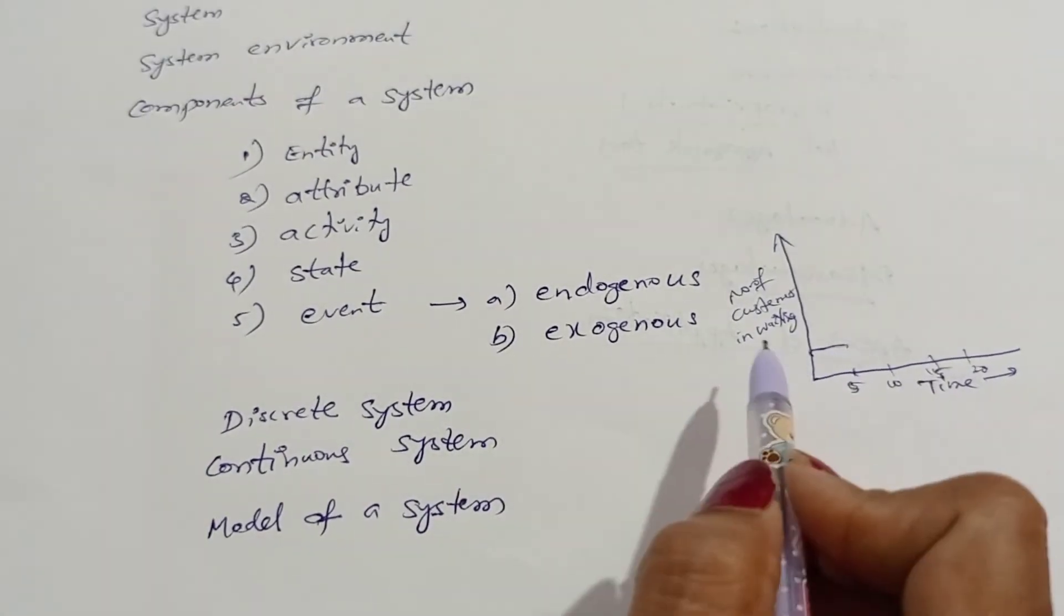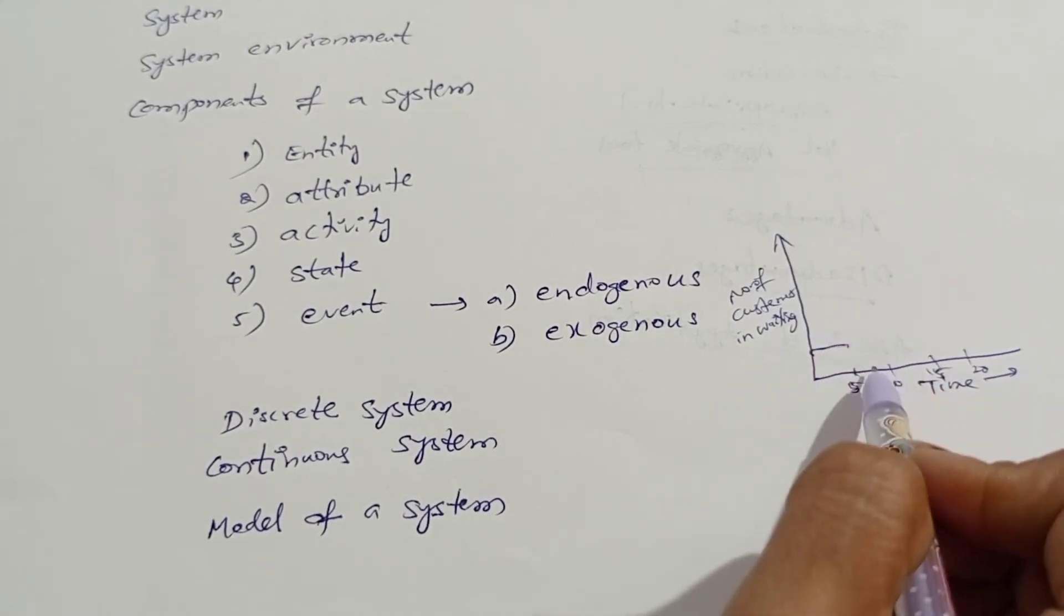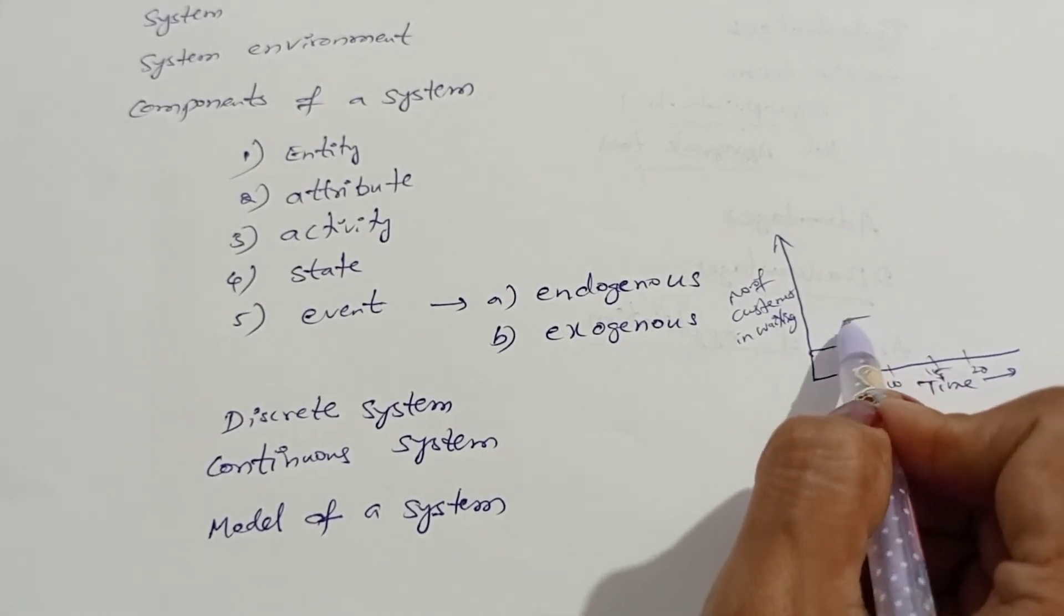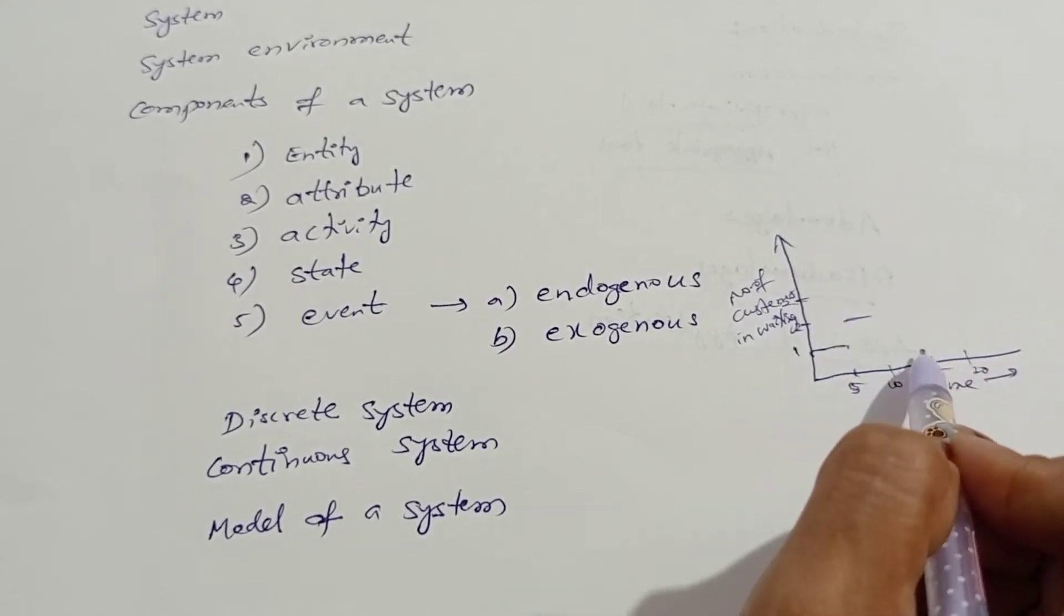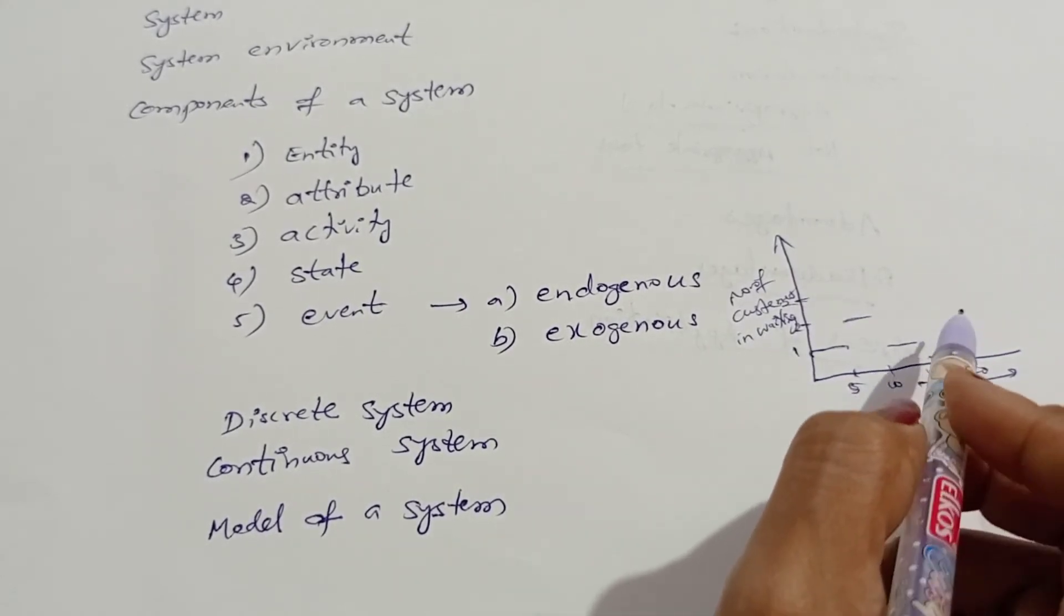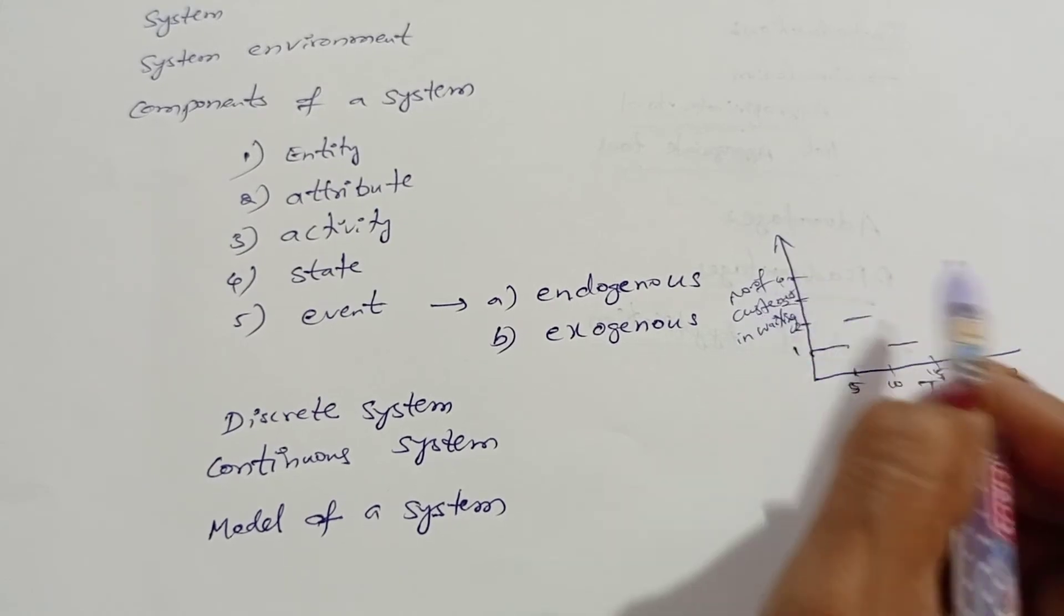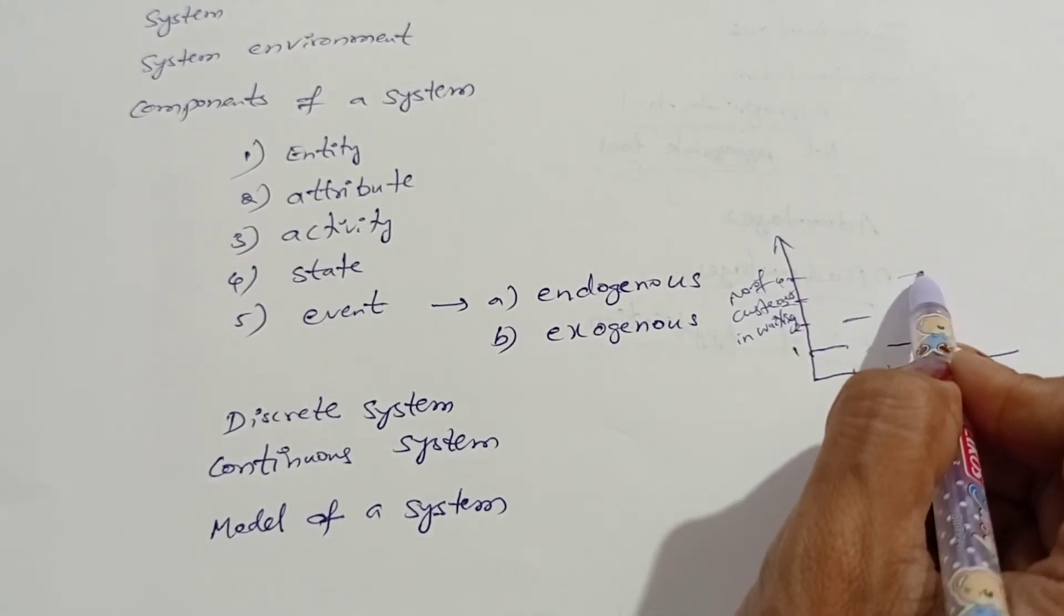That means only one customer is getting the service. Next, after that, maybe two customers are waiting in line. Then, maybe only one customer. Sometimes maybe four customers waiting in line, and so on.